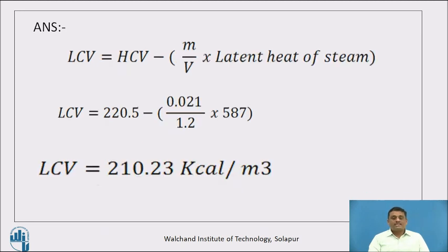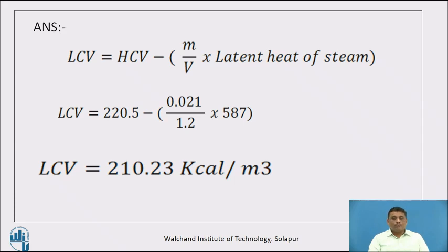For LCV in the Boys calorimeter experiment, the formula is: LCV = HCV − (m ÷ V) × latent heat of steam. HCV = 220.5 kcal/m³; m (mass of steam condensed) = 0.021 kg; V = 1.2 m³; latent heat of steam = 587 kcal/kg. Substituting all values, the answer for LCV is 210.23 kcal/m³.